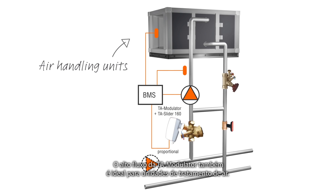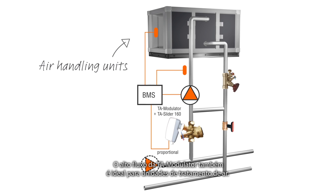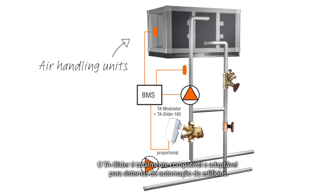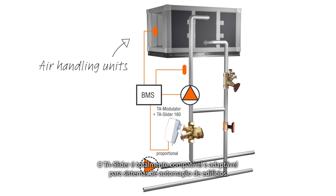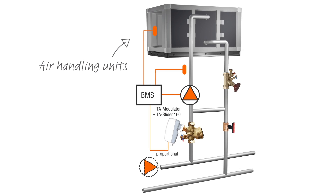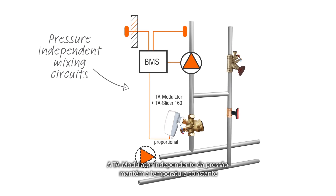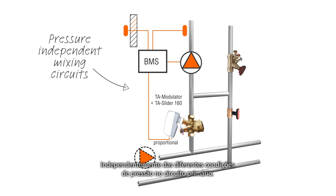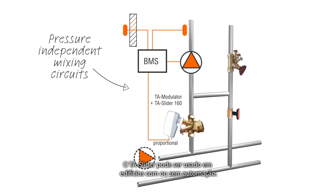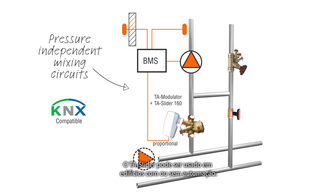The high flow range of TA modulator is also ideal for air handling units. TA slider is fully compatible and adaptable to all building automation systems. The pressure independent TA modulator keeps the temperature constant regardless of different pressure conditions in the primary circuit. TA slider can be used in buildings with or without bus communication.